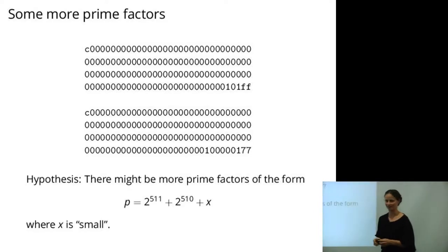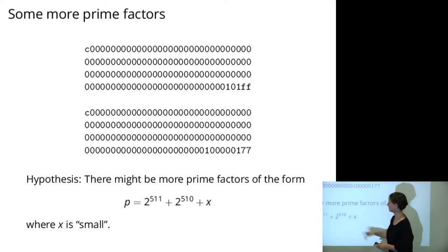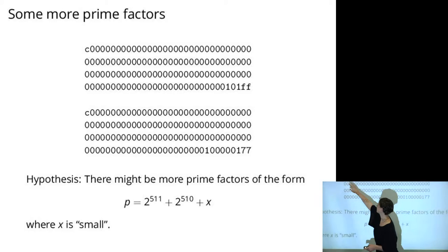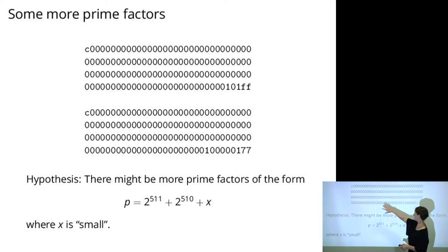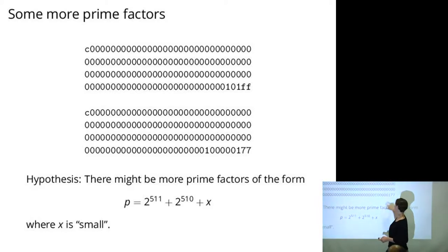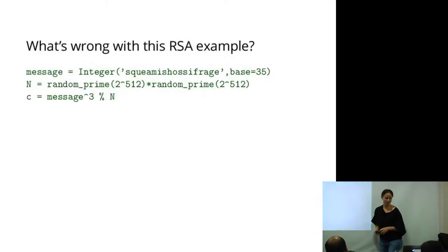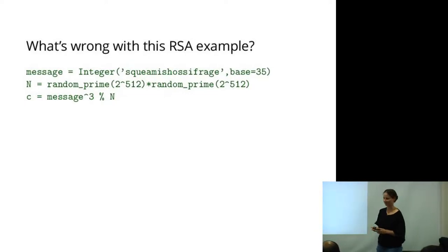We hypothesize there are more keys that look like this: set the top two bits to one, fill out a pattern — in this case all zeros — but maybe some other pattern, plus some unknown least significant bits. Now I'm going to do a long interlude about lattices. To get there, we'll take a little walk.